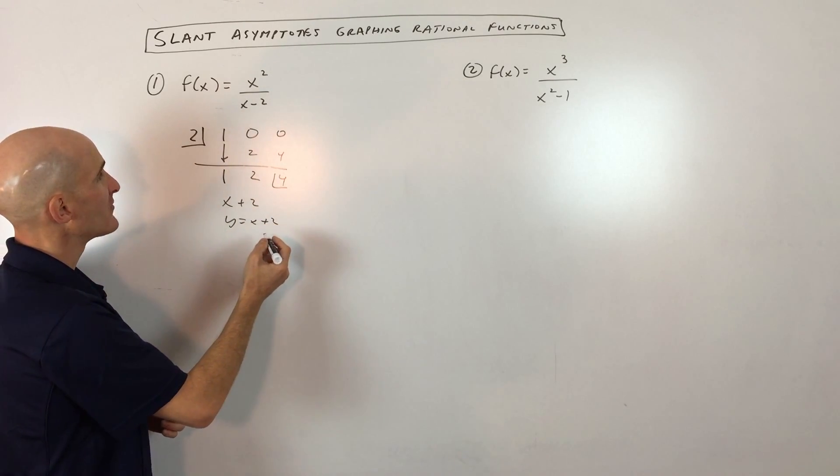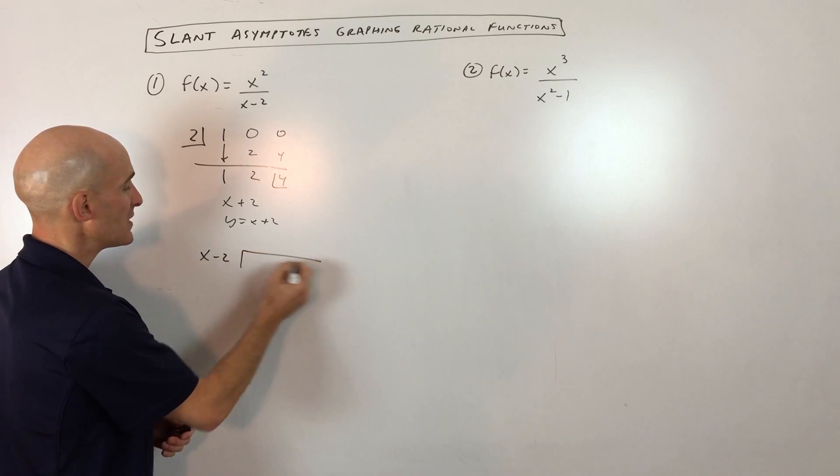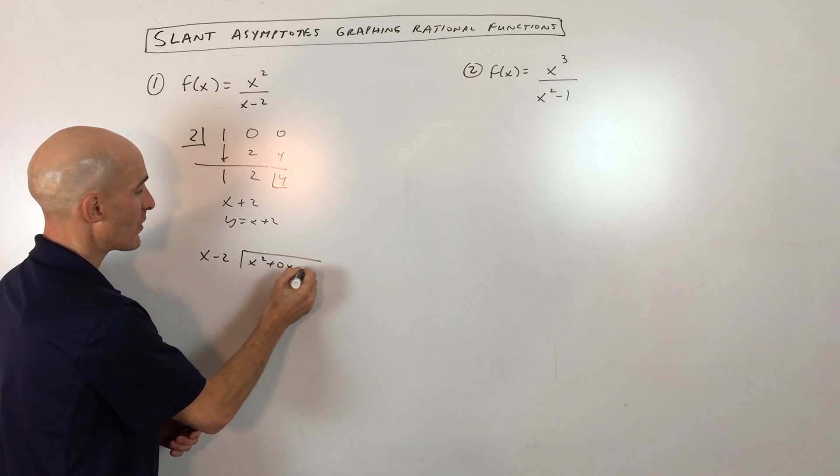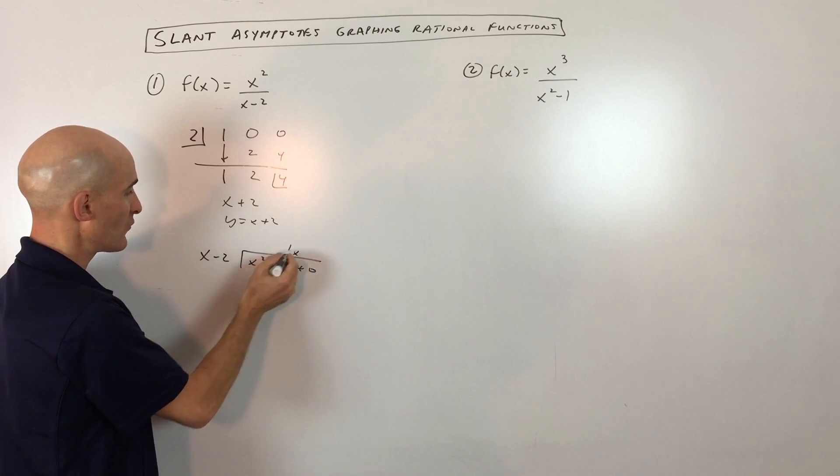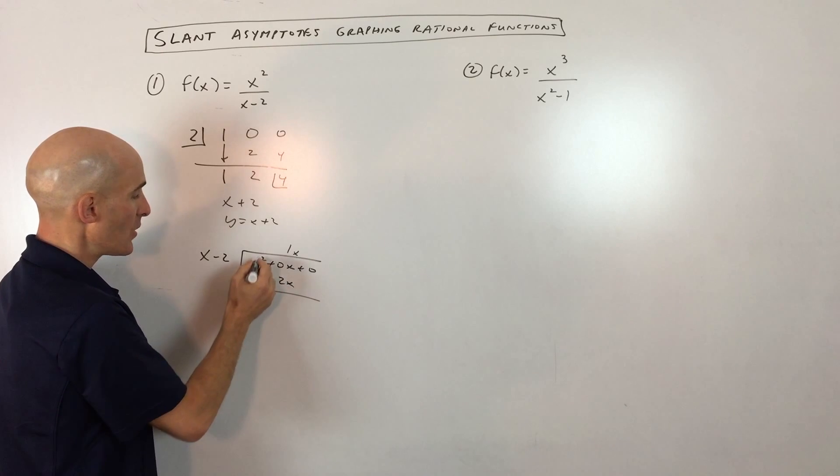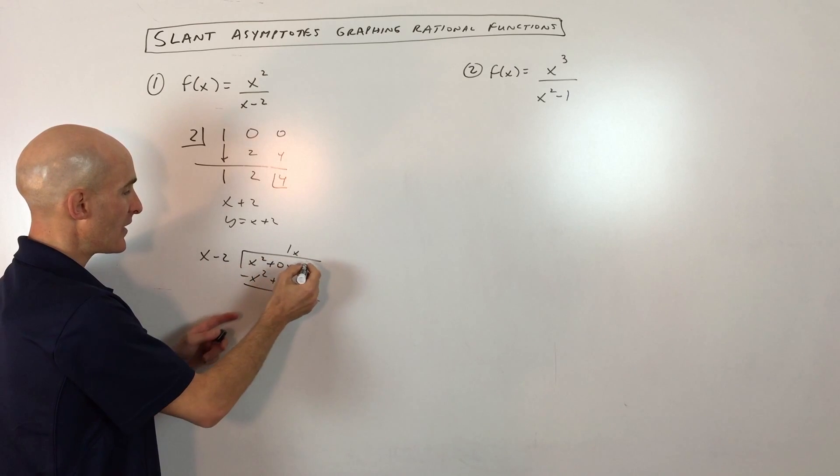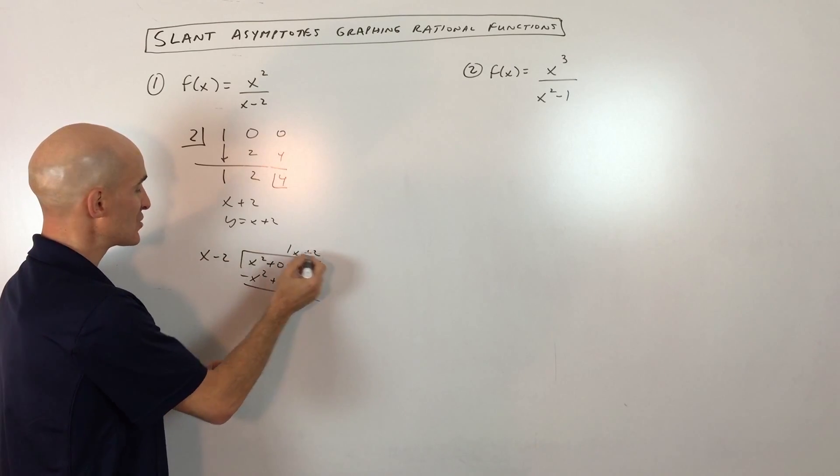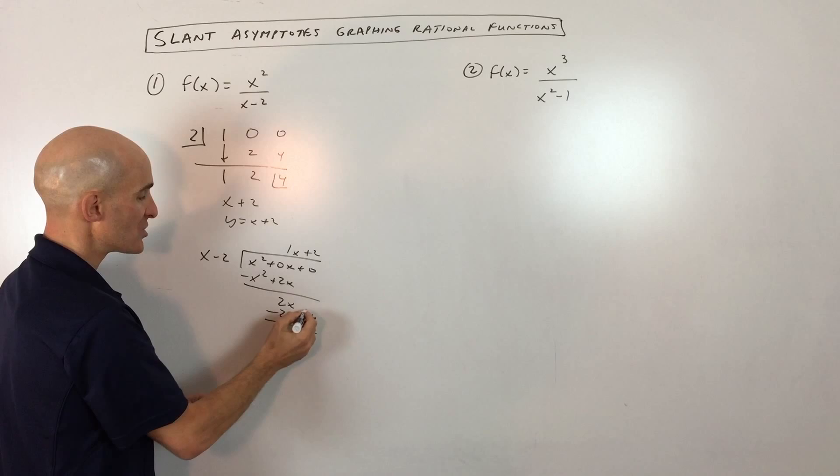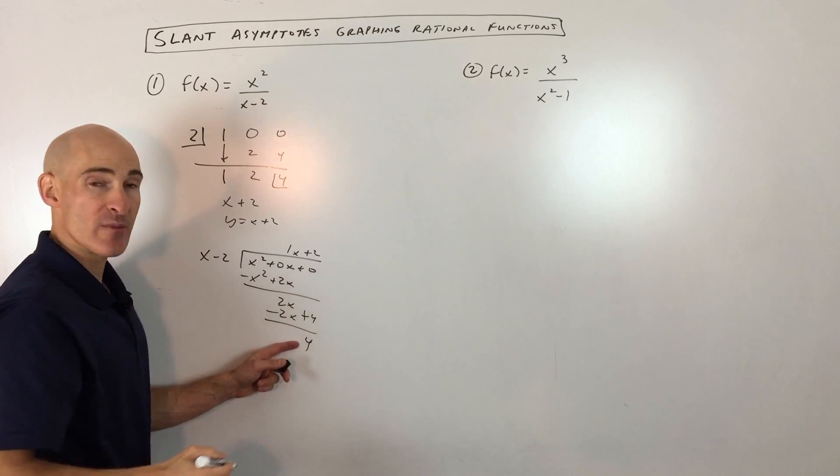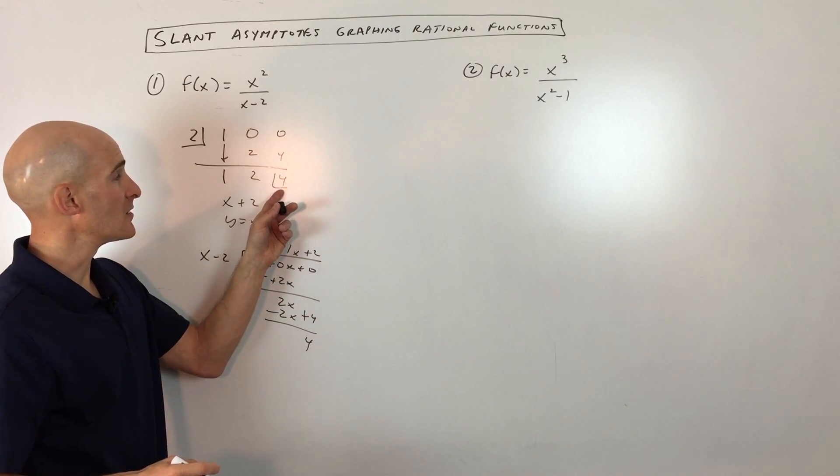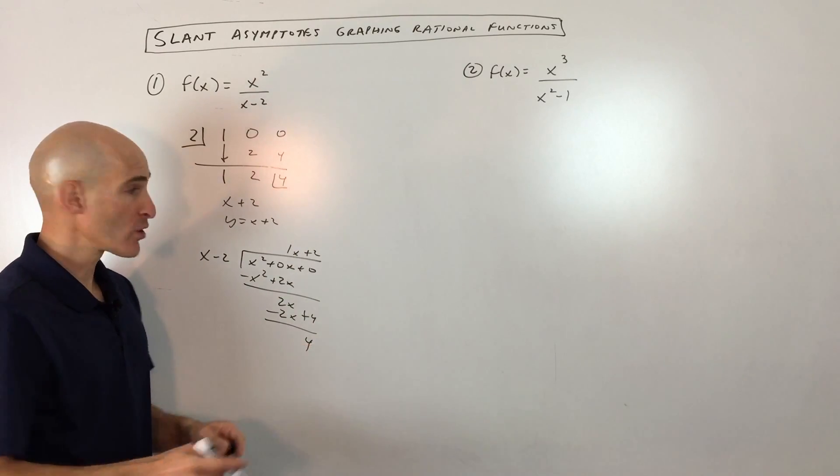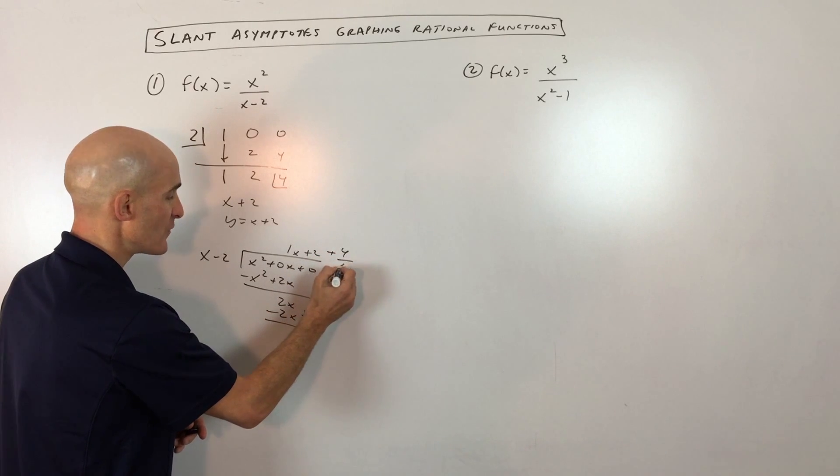If you want to do the polynomial long division, what you would do is x minus 2 is going into x squared plus 0x plus 0. Let's see. What times x gives us x squared? That's going to be 1x. We distribute. We get x squared minus 2x. We subtract, or you could change the signs to the opposite and add. That's what a lot of students do. And then what times x gives us 2x? That's 2. We distribute. We get 2x minus 4. We change the signs to the opposite. We add the remainder you don't have to worry about when you're finding the slant asymptotes, when you're doing the synthetic division or polynomial long division.